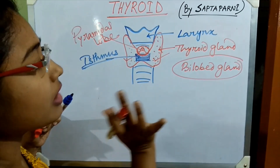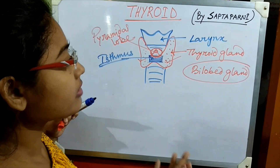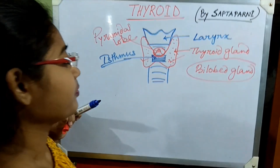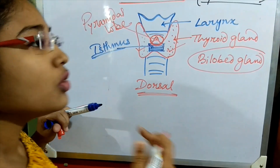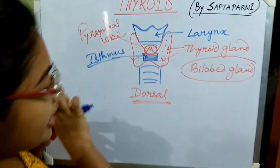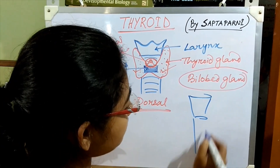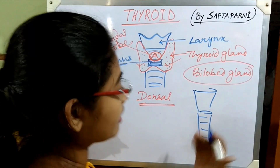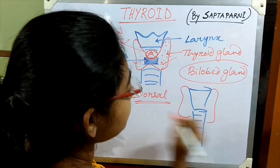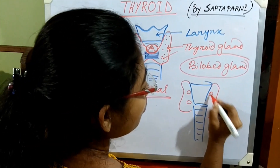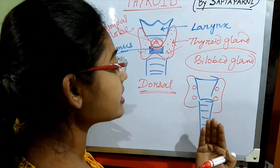These are the main structural characteristics of the thyroid gland, and you can find that it looks like a butterfly. This is the dorsal view. If you see the ventral view of the thyroid gland, you will see the trachea and the thyroid gland from the front.